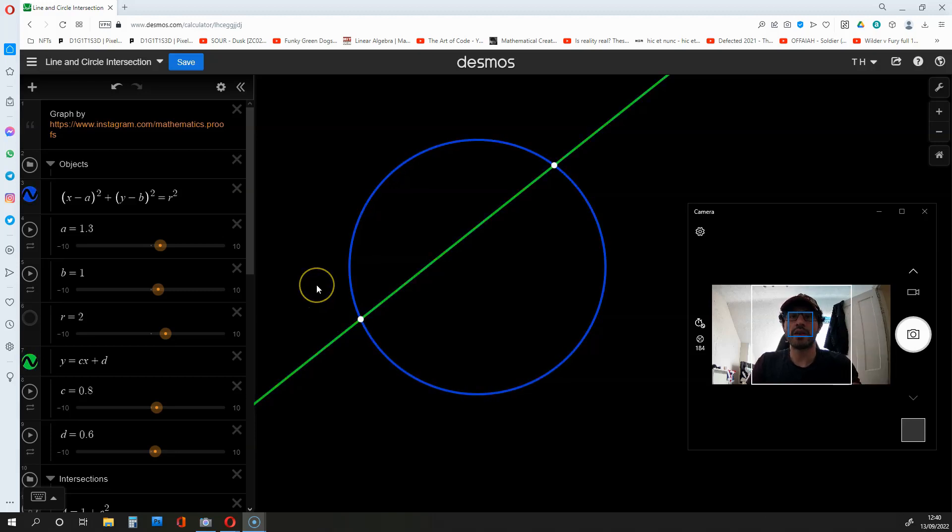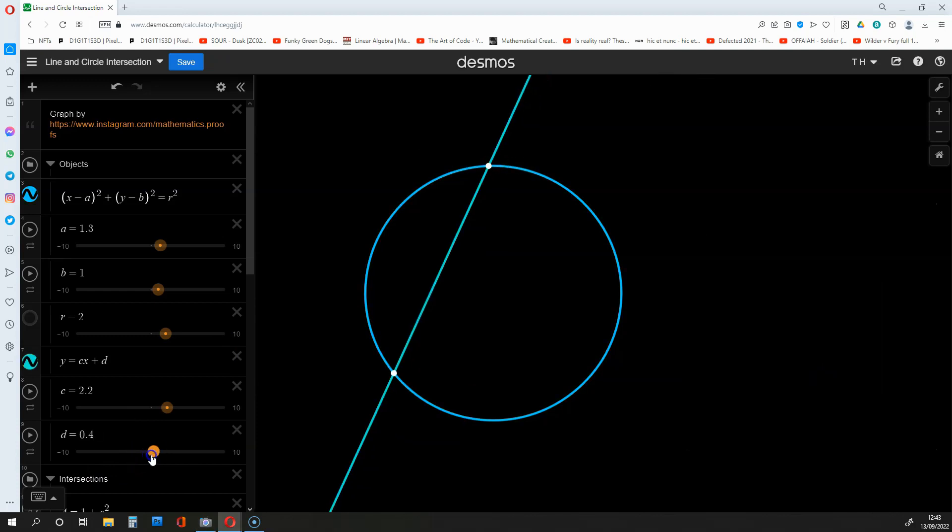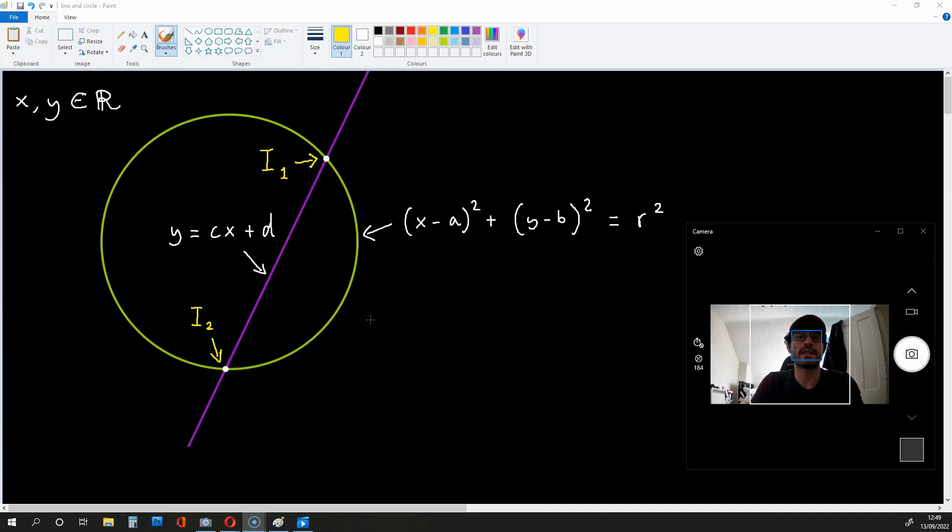Hi there. In today's video, I'm going to be showing you how to find the intersection points of a circle and line in two dimensions. After this video, you should be able to create one of these Desmos graphs on your own, and I will also provide you with a link to this interactive graph. Now, let's start finding these intersection points.